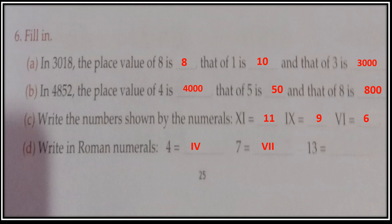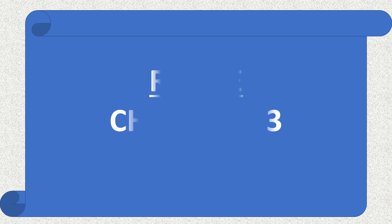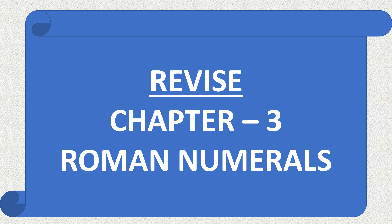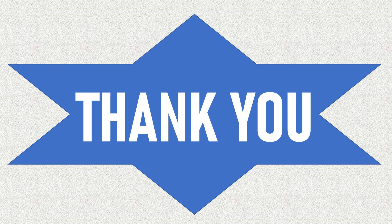Then 7 is VII and 13 is XIII. Now children, as we have completed the worksheet, your homework is to revise chapter 3 — that is Roman numerals. Tomorrow I am going to give you a worksheet based on this and you will do the practice. I hope you have understood all the topics. Thank you.